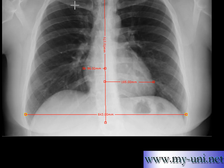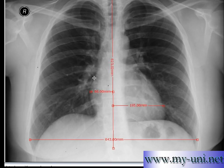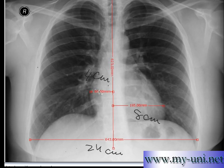Unfortunately, the calibration on my computer is not right to measure the exact numbers, but we can make assumptions. For the sake of simplicity, we'll assume that the right-side measurement was 4 centimeters, the left-side measurement was 8 centimeters, and the total thoracic width was 24 centimeters. So 4 plus 8 is 12 — 12 centimeters is the transverse diameter of the heart, and 24 centimeters is the maximum width of the thoracic cavity.